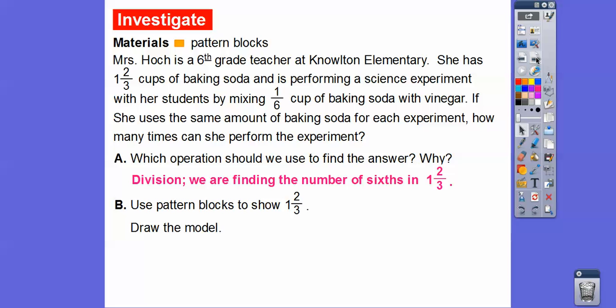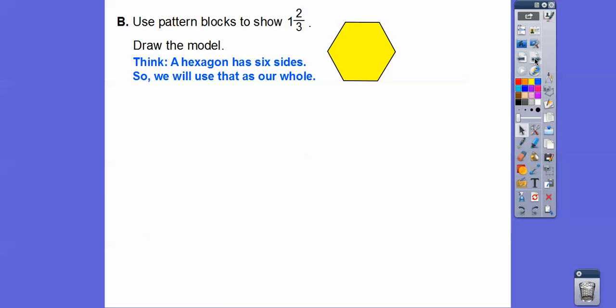So we're going to go ahead and use pattern blocks to represent 1 and 2/3. So since we're dealing with 6, you guys, I figure we'll start with a hexagon right here. So a hexagon has 6 sides, so we'll use that as our whole right there. And then we're going to cut this up into 1/3rds because this is 1 and 2/3. So if we cut it up into 1/3rds, it'll look like that.